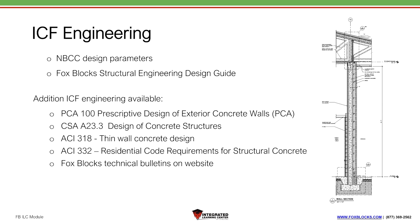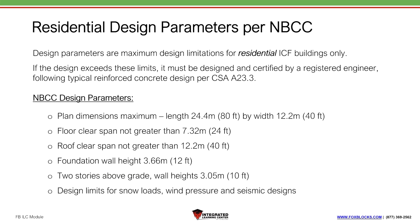Other references include CSA A23.3 (design of concrete structures), ACI 318 (thin wall concrete design), and ACI 332 (residential code requirements for structural concrete), as well as FoxBlocks technical bulletins on our website. These will all help you get your building permit. The residential design parameters per the National Building Code are essentially your limitations for using the charts — you can exceed these limitations with engineering, but without engineering you follow the charts directly.